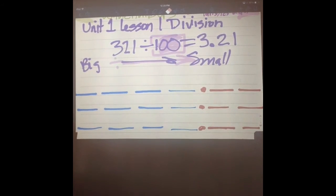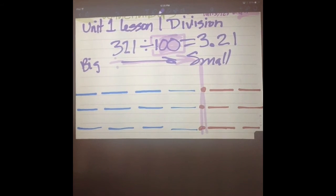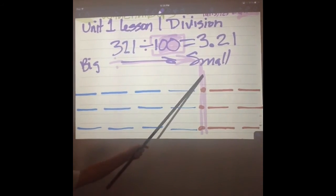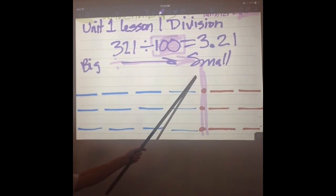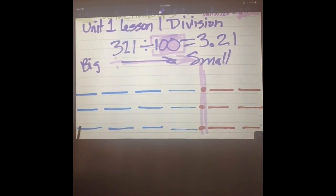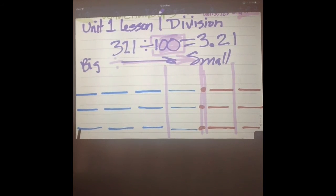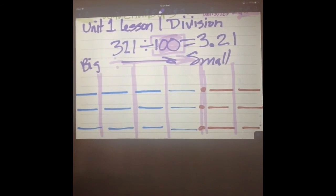Okay, now here's the biggest trick. Decimals—see these decimals? Do you notice that all the decimals are lined up? You have to make sure you keep your decimals lined up. And then you need to make sure you keep your place value lined up. Does that make sense? Yes.